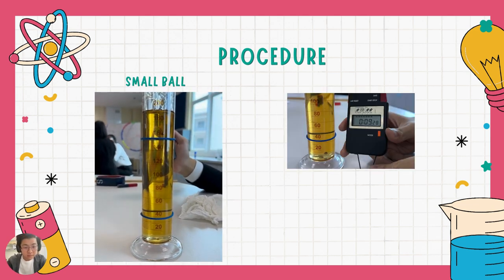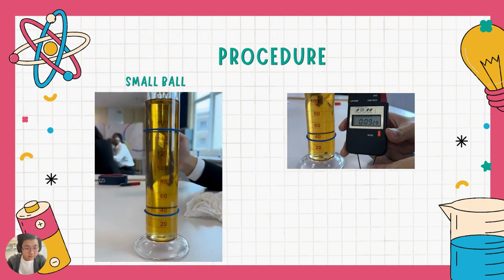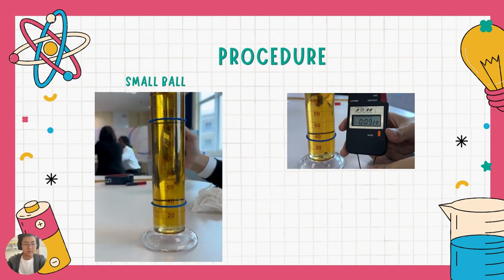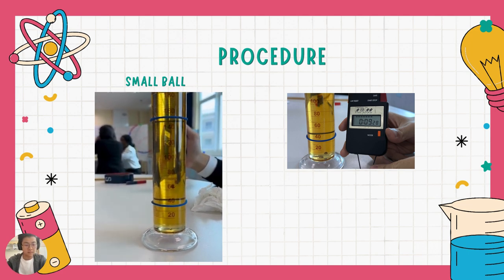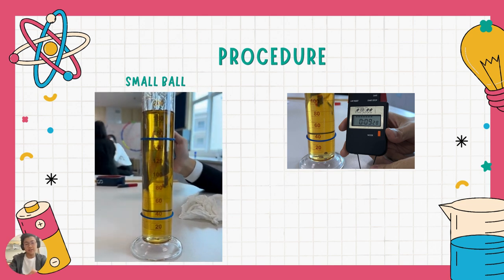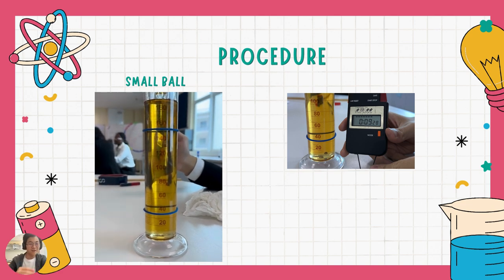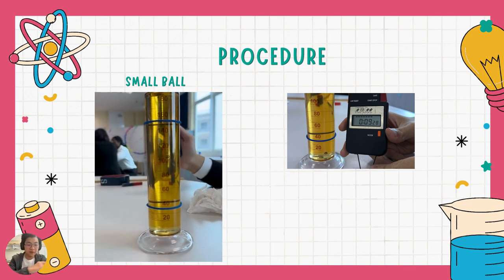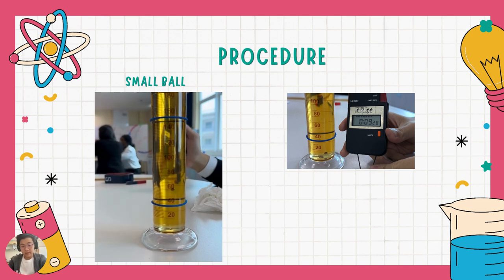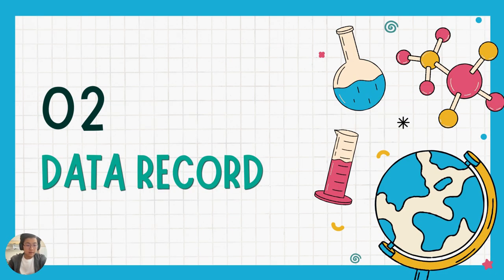And here's the small ball. You can see, it takes way longer than the two balls we've seen before, so now we can record the data in the spreadsheet.